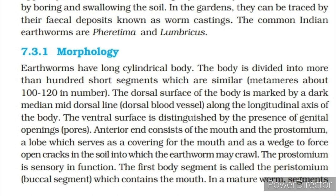Morphology: Earthworms have a long cylindrical body divided into more than 100 short segments (metameres), about 100 to 120 in number. The dorsal surface is marked by a dark median mid-dorsal line (dorsal blood vessel) along the longitudinal axis of the body. The ventral surface is distinguished by the presence of genital openings (pores). The anterior end consists of the mouth and the prostomium, a lobe which serves as a covering for the mouth and as a wedge to force open cracks in the soil. The prostomium is sensory in function. The first body segment is called the peristomium (buccal segment) which contains the mouth.